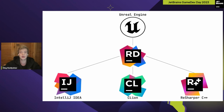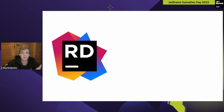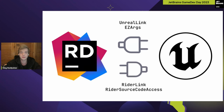Rider has two plugins for Unreal Editor — they are called UnrealLink and EasyArgs. Unreal Editor also has two plugins for more advanced integration with Rider, called RiderLink and Rider Source Code Access.